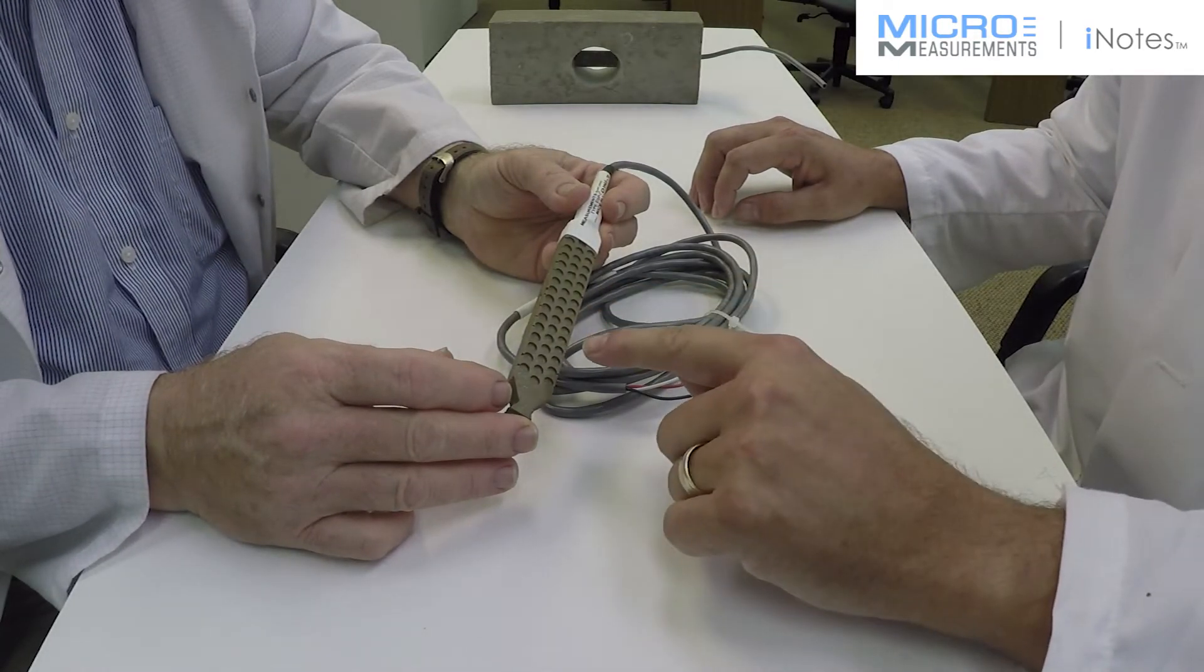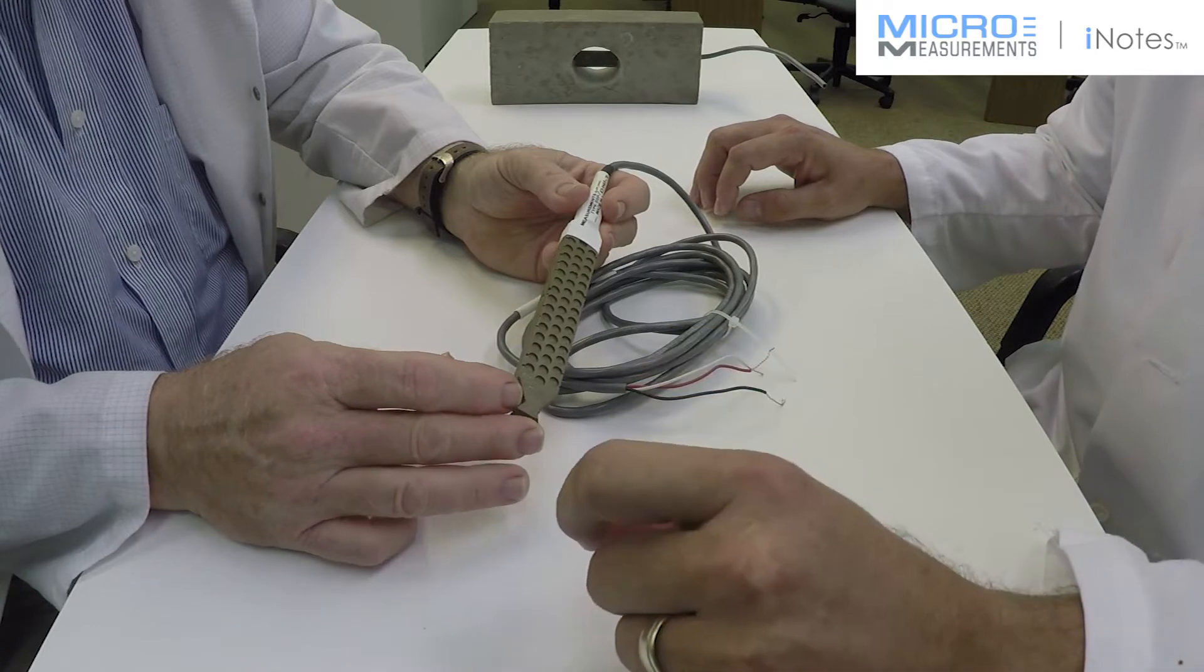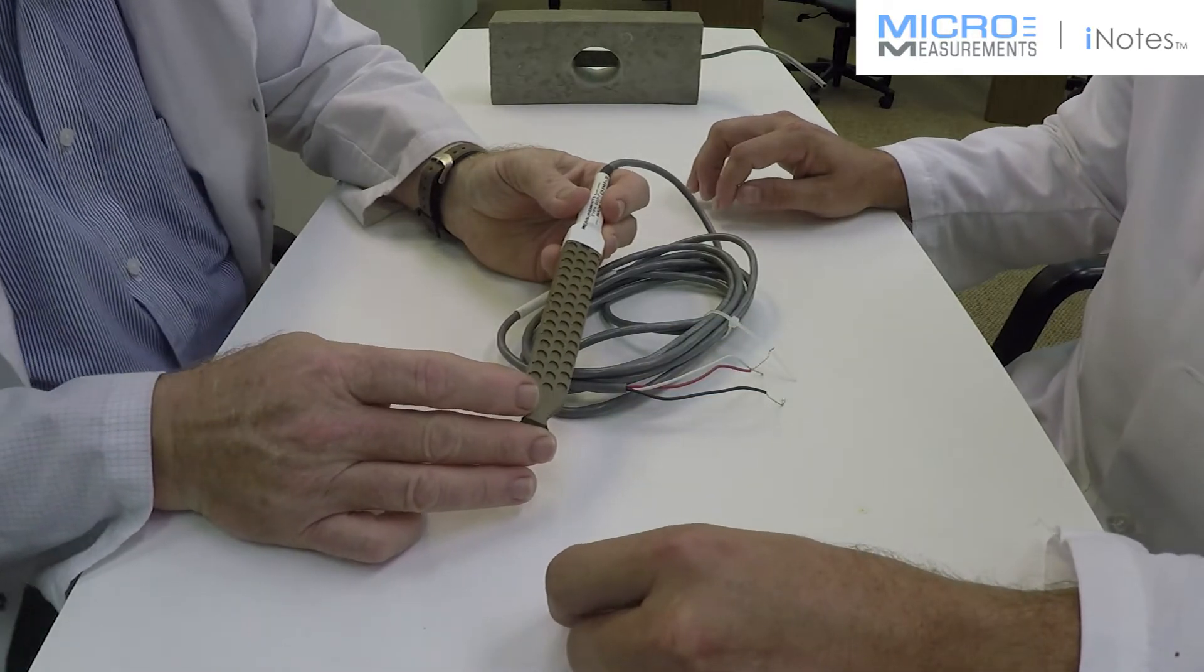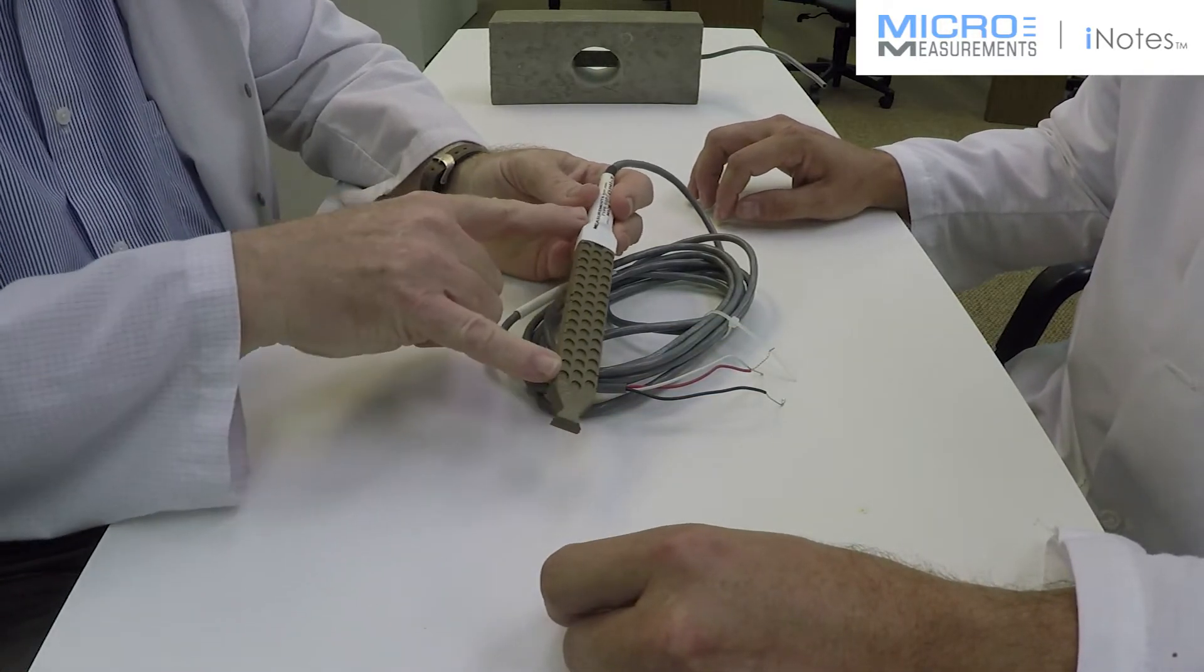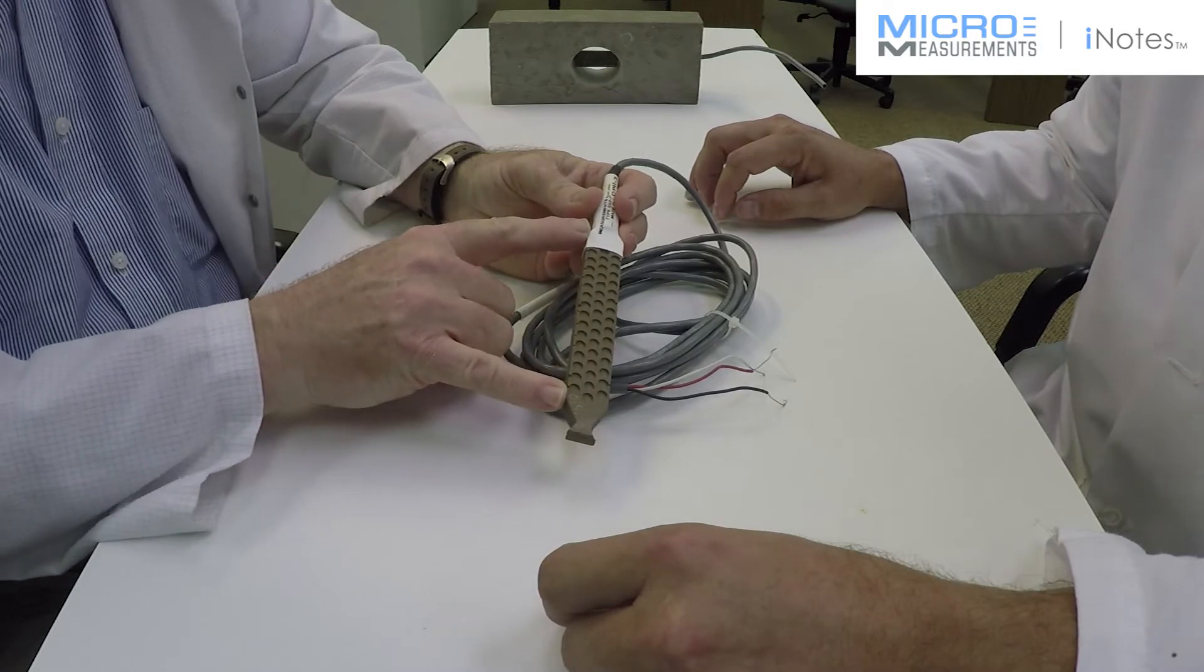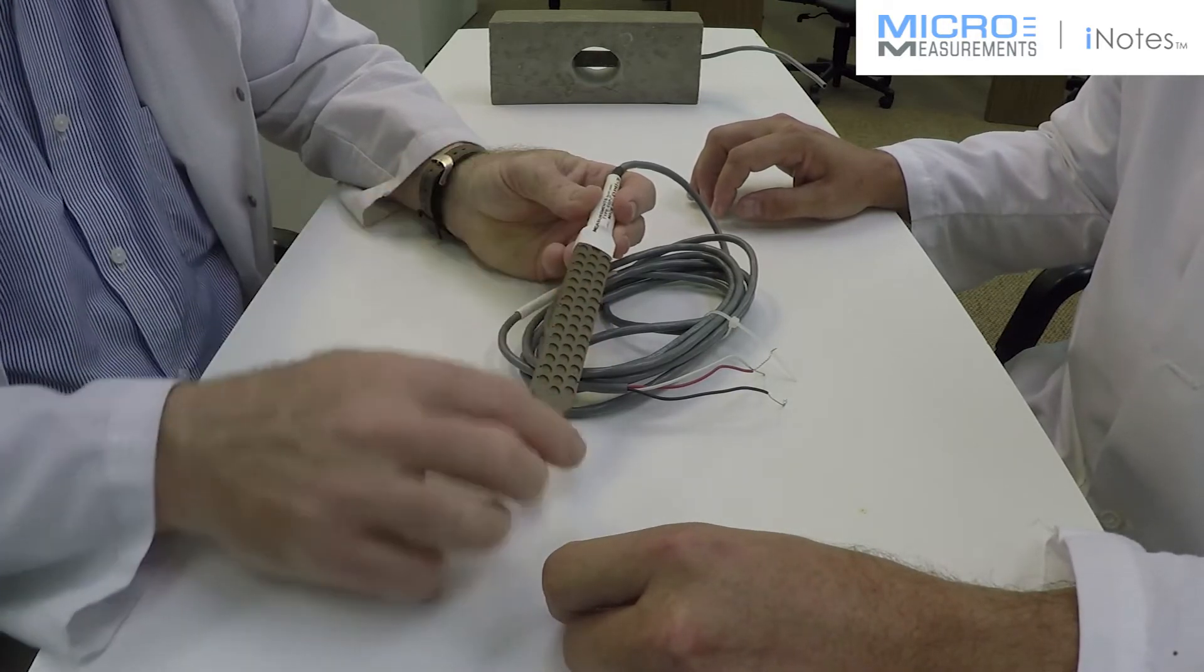Is it a 120 or 350 ohm? We make them in both 120 ohm and 350 ohm, and the gauge length is described as about five inches because it averages over that entire length.